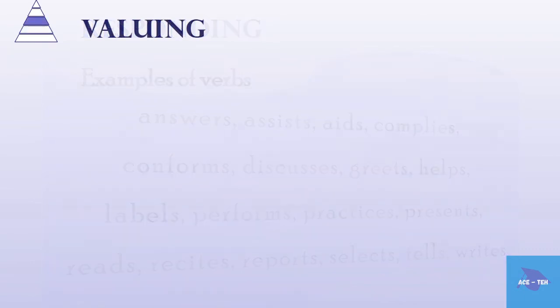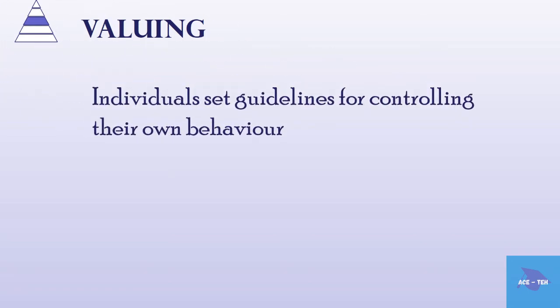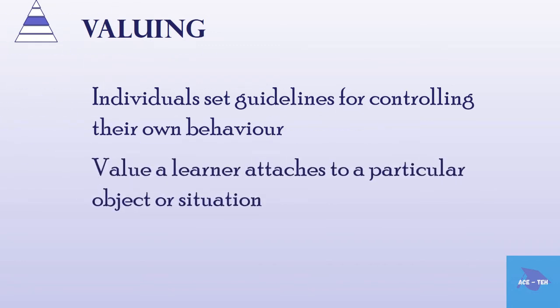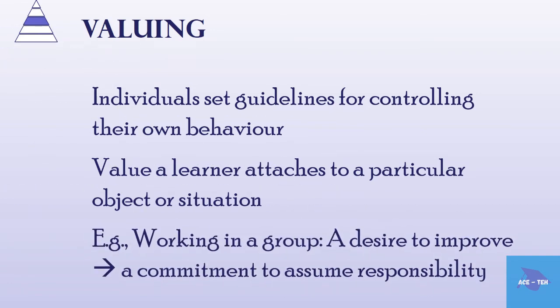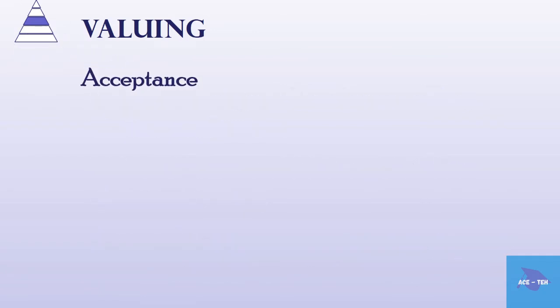The third level is valuing, where the individual sets guidelines for controlling their own behavior. Valuing is related to the worth or value a learner attaches to a particular object, phenomenon, behavior or situation. This ranges in degree from a desire to improve group skills to a commitment to assume responsibility for the effective functioning of the group. There are three sub-levels: acceptance of a value, preference for a value, and commitment to a value.